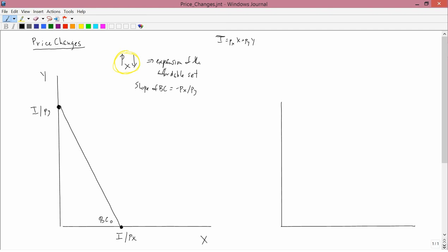But the bottom right point, I divided by PX, does have a change in one of its components. Its numerator doesn't change, but its denominator changes. The price of X has fallen, so the denominator's gotten smaller, so the whole fraction's gotten bigger.